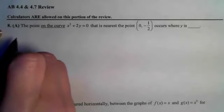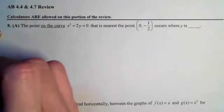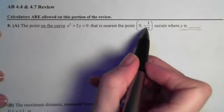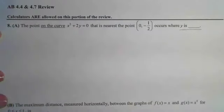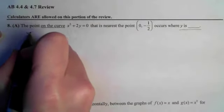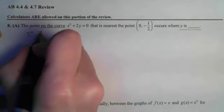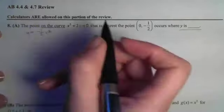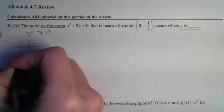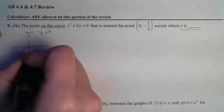So if we look at part A, it says the point on this curve that is nearest this point will occur where y is a particular number. So I want the y value of the point that is closest to this one on this curve. So that means I need to be able to graph this. The quickest way to do that is to isolate y, and I will get y equals negative 1 half x squared. So that's going to be a parabola that opens down with the vertex at the origin, and then I have the point 0, negative 1 half.